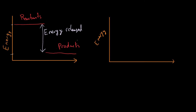When energy is released into the surroundings, this is what we call an exothermic reaction. So this is the energy level diagram for an exothermic reaction. The opposite to this is going to look like we start with a line at the bottom and finish with the line at the top.